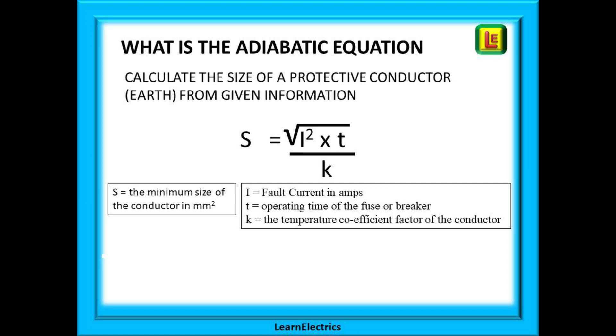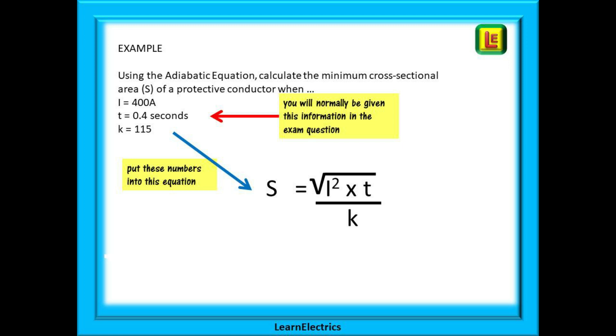So why not do an example of this? Here is a typical exam question. Using the adiabatic equation calculate the minimum cross sectional area or S of a protective conductor when I equals 400 amps, T equals 0.4 seconds and K equals 115.